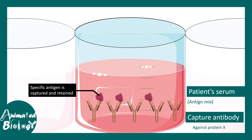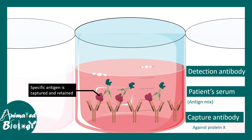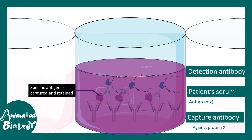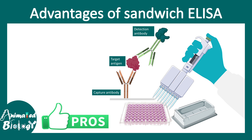The detection antibody is then provided. These detection antibodies are often enzyme-conjugated at their Fc region. After adding the detection antibody and washing away the unbound fraction, the substrate is provided. If the enzyme is present and binding occurred properly, the substrate is converted into a colored product, and this color change is detected in a plate reader.